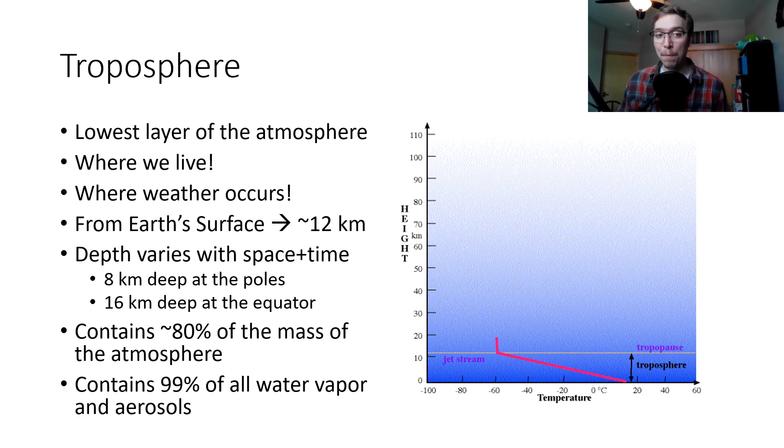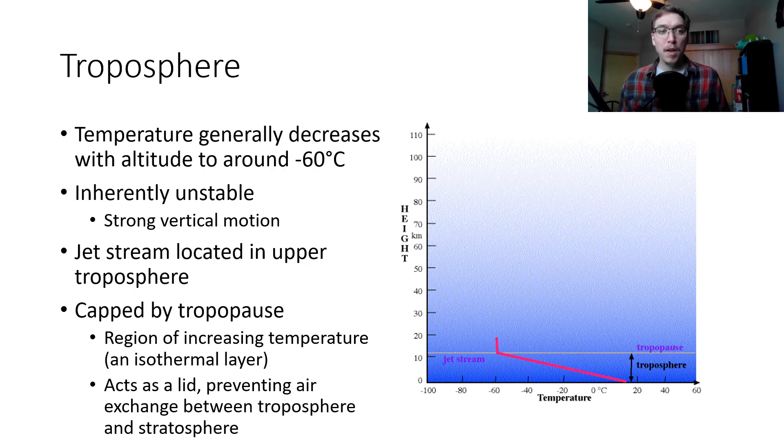And contains 99% of all the water vapor and aerosols within our atmosphere. Temperature generally decreases with altitude to around negative 60 degrees Celsius at the top of the troposphere. It is a layer within the atmosphere that is inherently unstable, that means there is strong vertical motion within air parcels going on. There's a lot of mixing of air within the troposphere. Things like hot air rises and cold air descends. Rising warm air and descending cold air is mixing. There are updrafts and downdrafts, turbulence you've probably experienced on a plane once or twice.